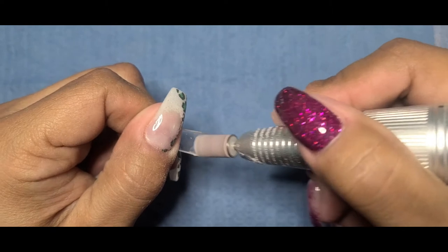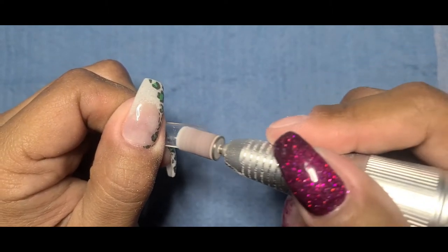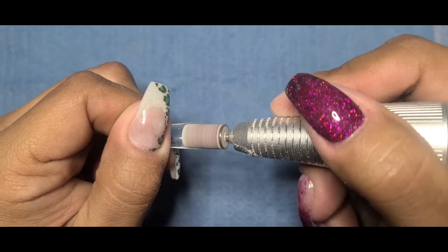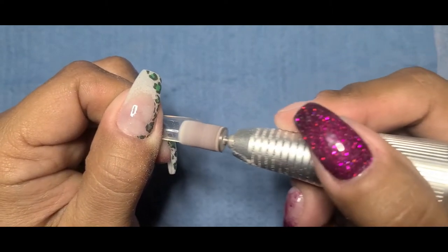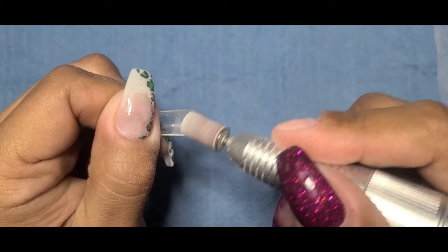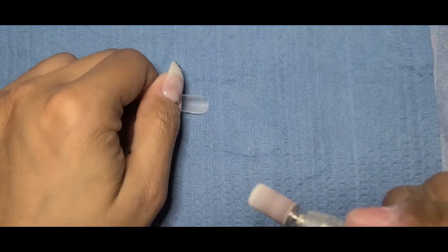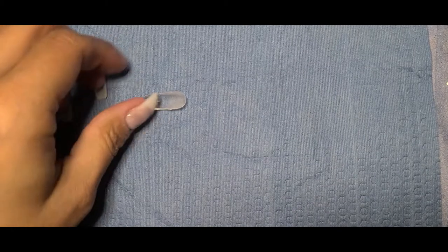As you see, I'm going in at different angles, getting it nice and etched up on the inside of the tip because this is what the builder gel is going to grab onto and what's going to keep the tip from popping off like a dual form. I like to use this method because the half coverage tips just weren't working for me. So as you can see, I just etched the area where it's going to be coming into contact with my index fingernail.